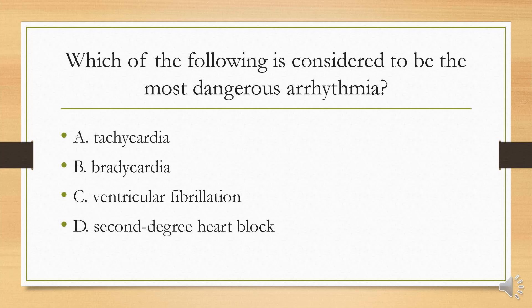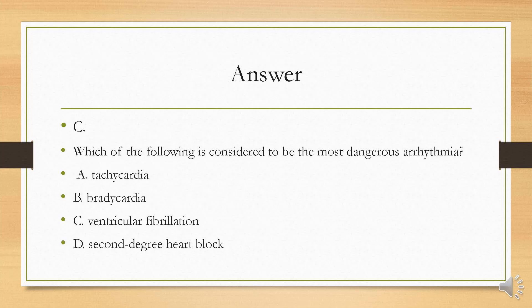Which of the following is considered to be the most dangerous arrhythmia? Is it A, tachycardia; B, bradycardia; C, ventricular fibrillation; or D, second degree heart block? Your answer is C. Ventricular fibrillation is life-threatening. When ventricular fibrillation occurs, the lower chambers quiver and the heart can't pump any blood, which will result in cardiac arrest.